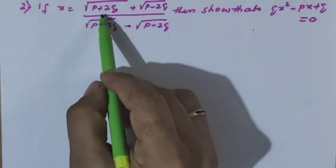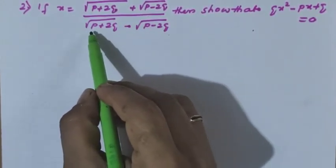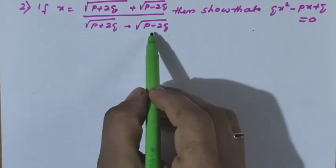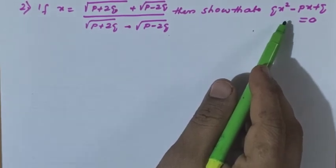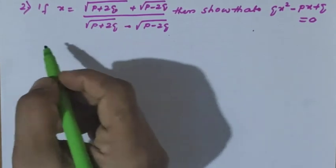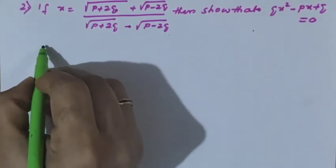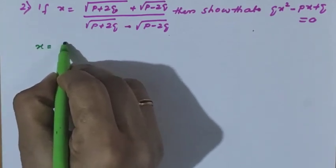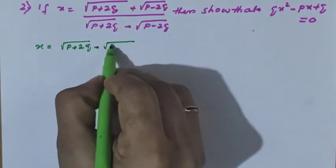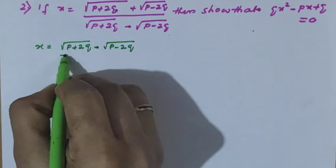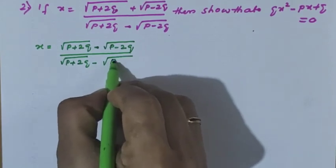Next problem: x equals root of p plus 2q plus root of p minus 2q, whole divided by root of p plus 2q minus root of p minus 2q. Show that qx squared minus px plus q equals 0. This is a different question. Let us see — x equals root of p plus 2q, same concept but a bigger question with p minus 2q in the root. Here also p plus 2q minus p minus 2q.